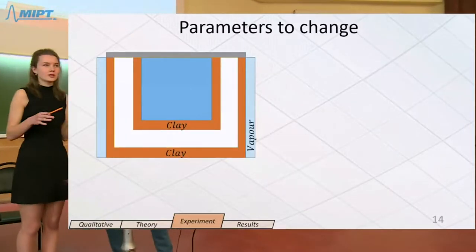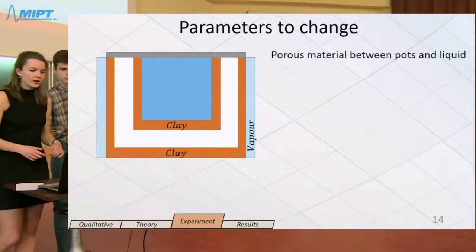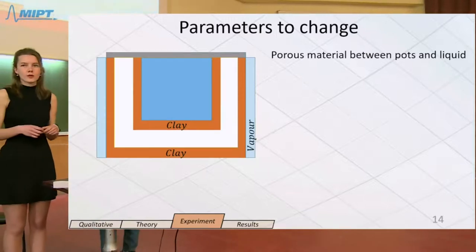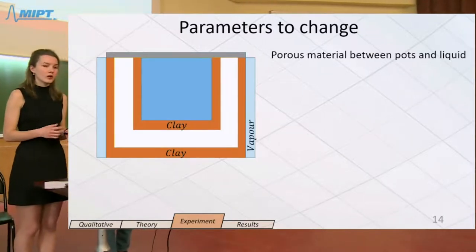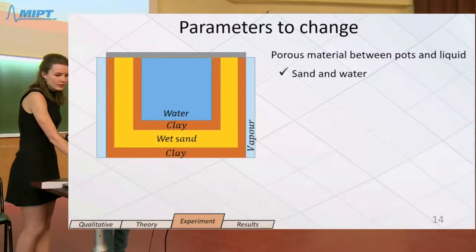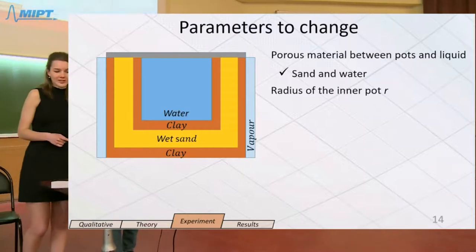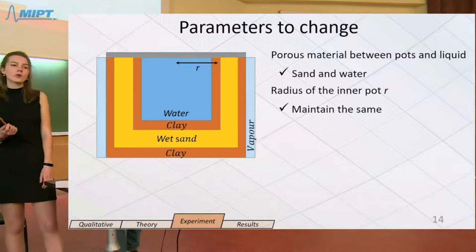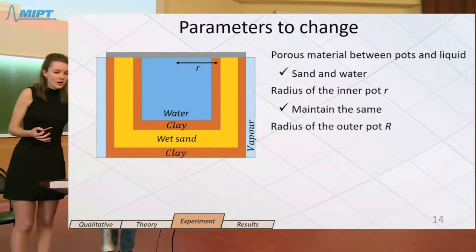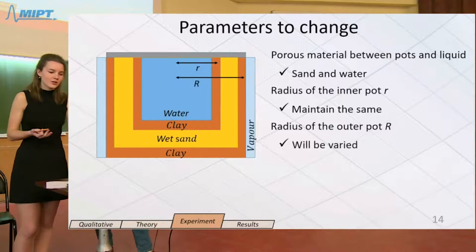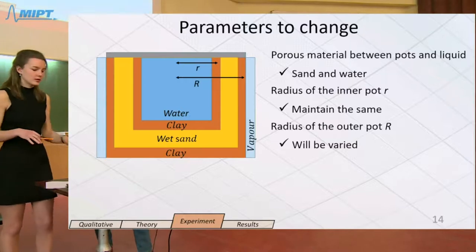Now let's decide on the parameters we'll change in our system. First of all, we can change porous material between pots and the liquid. But as wet sand and water are the most available materials for that, we will not change it. Then we can vary the radius of the inner pot, but we will not vary that either because we want to maintain the water capacity in the inner pot the same. Then we could vary the radius of the outer pot, and definitely we will do that in order to change the quantity of wet sand in the pot.